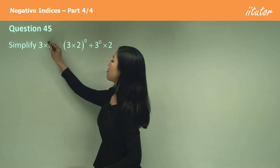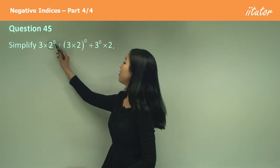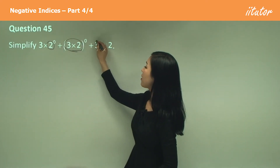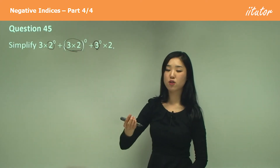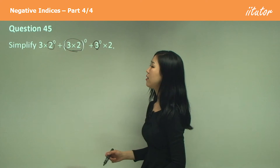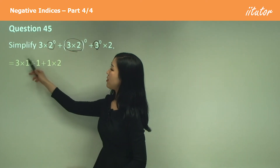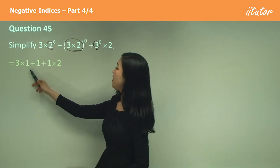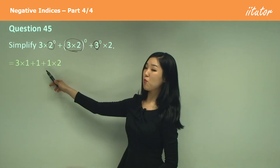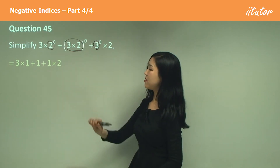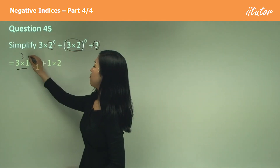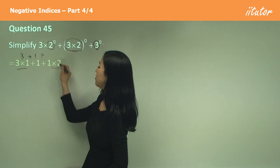So zero here is the power — two is to the power of zero, this whole thing is to the power of zero, and three is to the power of zero. Watch out for those that don't have a power of zero. So here it's going to be three times one, which is one. That whole thing to the power of zero is one. Three to the power of zero is one, and the two is left. So we have three plus one plus two, which is six.